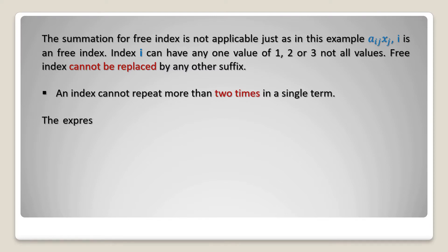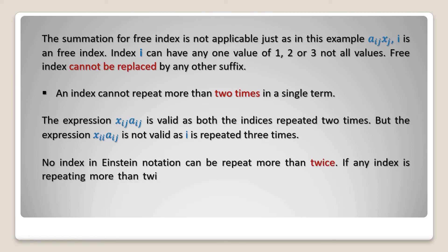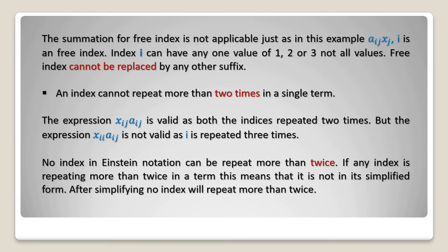An index cannot repeat more than two times in a single term. The expression xij aij is valid as both indices repeat two times, but the expression xii aij is not valid as i is repeated three times. No index in Einstein notation can be repeated more than twice. If any index is repeating more than twice in a term, this means it is not in its simplified form. After simplifying, no index will repeat more than twice.